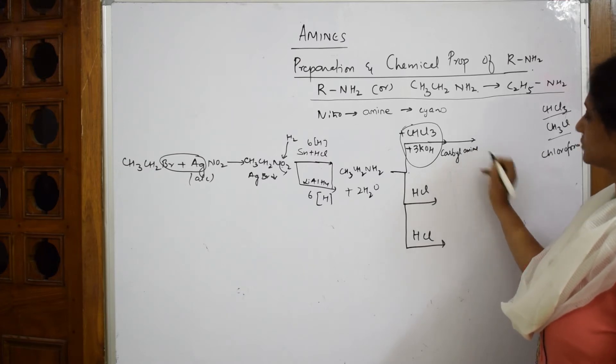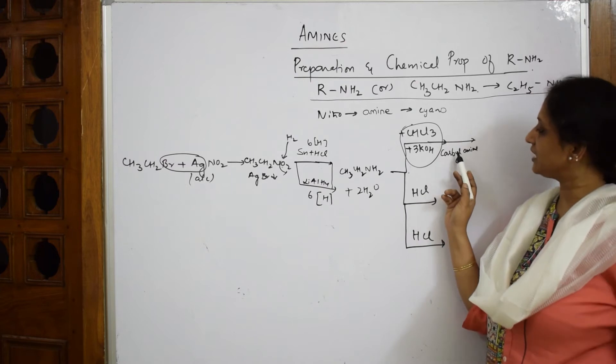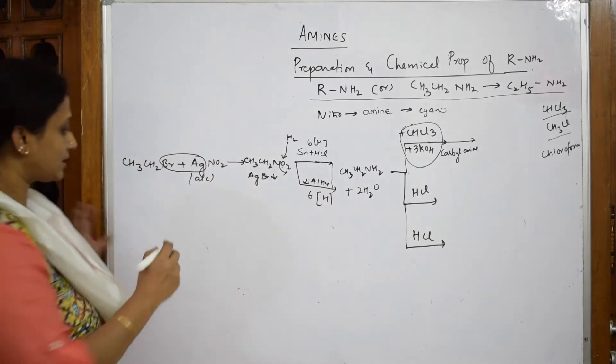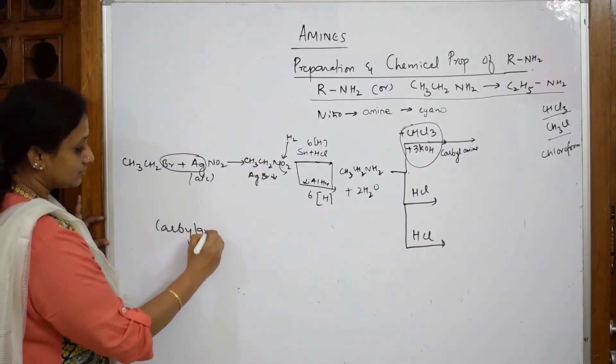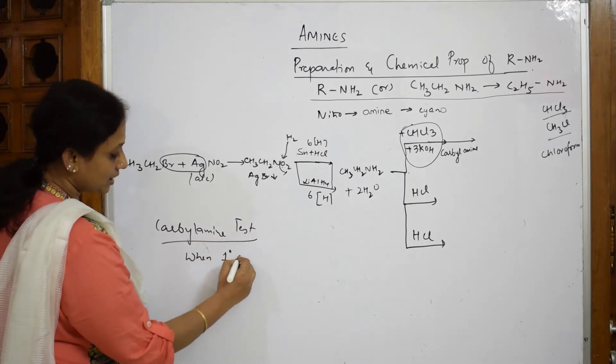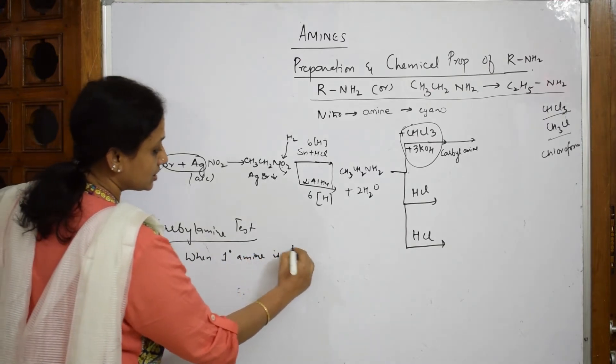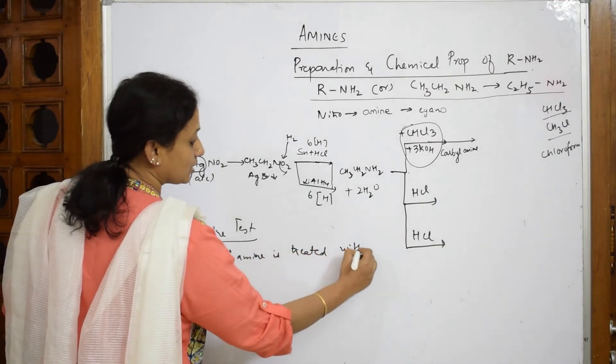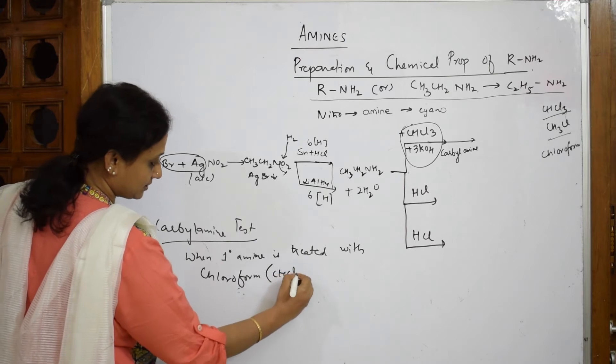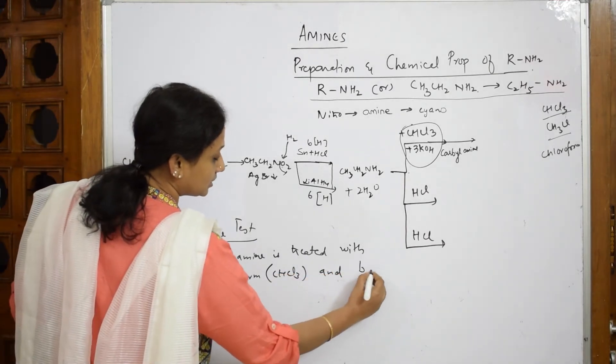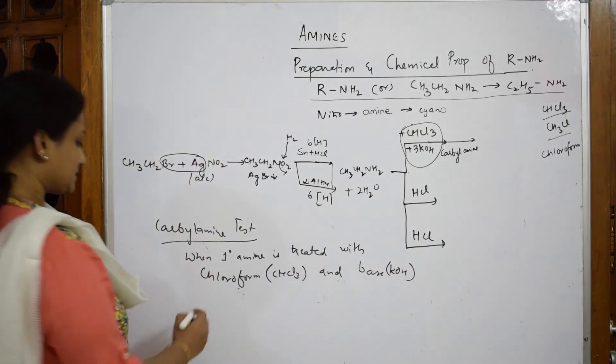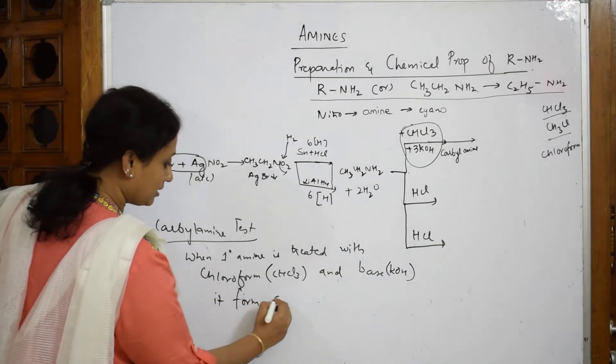What do I write in words? In carbylamine reaction or test, what is happening? When primary amine is treated with chloroform - what is chloroform? Chemical formula CHCl3 - and a base, here we are going to take KOH, yes, three moles I have taken. It forms an offensive smelling compound.